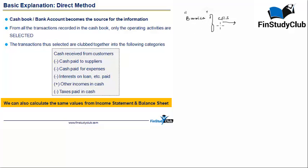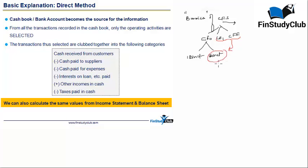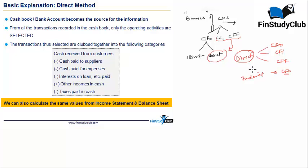If you have done the basics, you would be aware that there are three sources of cash flows: cash flow from operations, investing, and financing. Out of the three, cash flow from operations can be prepared by the indirect method and by the direct method. The direct method can help you arrive at CFO, CFI, and CFF, whereas the indirect method can be helpful only in the case of CFO. So my focus for the current session is on the direct method.